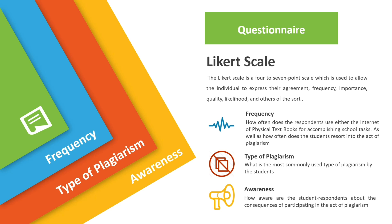The questionnaire is separated into three sections: mainly the frequency, the type of plagiarism, and the awareness. The frequency answers how often student respondents use either the internet or physical textbooks to answer school tasks, and how often they resort to plagiarism. The type of plagiarism tackles what the most common type of plagiarism used is. The awareness is to find out how aware the students are in terms of the consequences of plagiarism. All of these questions are rooted from the statement of the problem of the study.